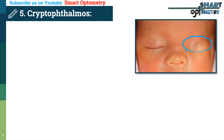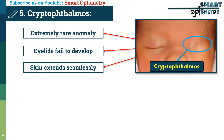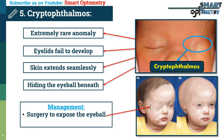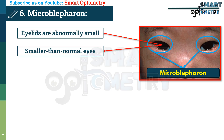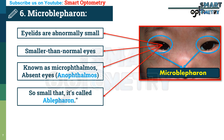Now, cryptophthalmos. Cryptophthalmos is an extremely rare anomaly where the eyelids fail to develop and the skin extends seamlessly from the eyebrow to the cheek, hiding the eyeball beneath. Surgery may be considered to expose the eyeball, but treatment is complex and depends on the severity of the condition. It is usually associated with smaller than normal eyes, known as microphtalmos, or even absent eyes, called anophtalmos. In some cases, the eyelids are so small or underdeveloped that the condition is called microblepharon.